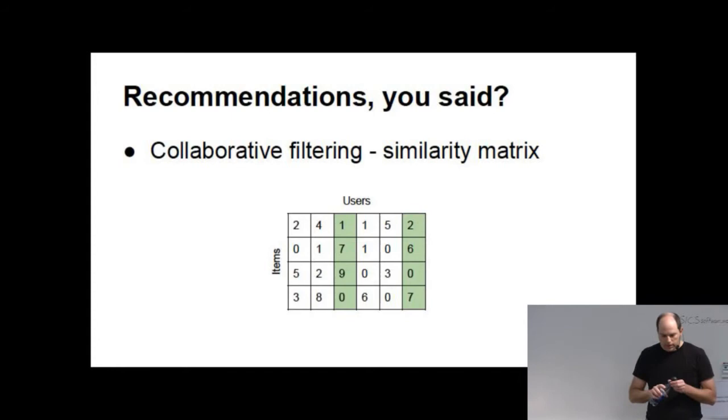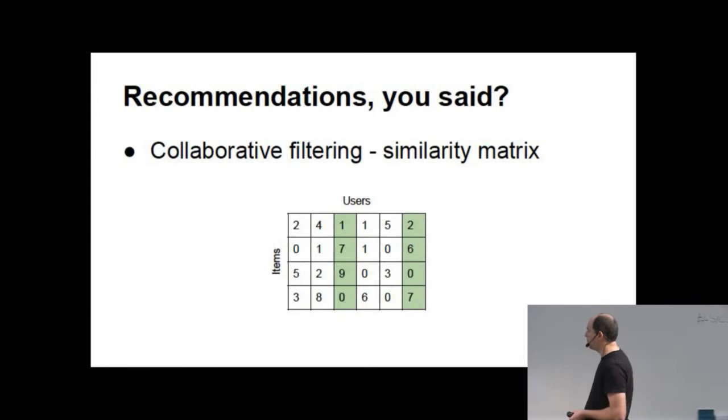So in this tiny toy case, you might conclude that the top green lines are similar and the bottom ones are not. So therefore we should recommend the third row to the user on the right and fourth to the one on the left. Now, in reality, these matrices can be fairly big. You might have lots of users and lots of items. In the Spotify case, we have 50 million active users, a lot more inactive users. And then there's about 20 million songs. So that's a fairly big matrix.